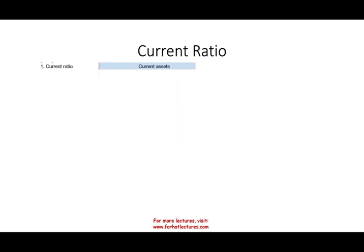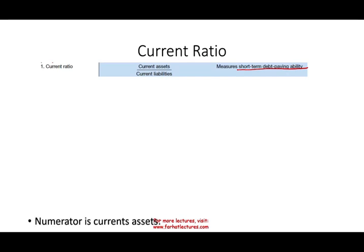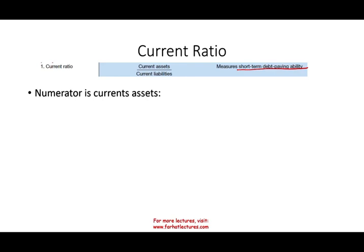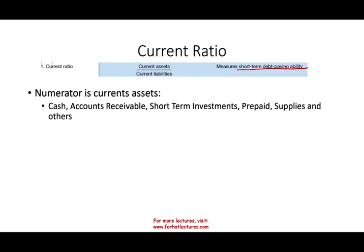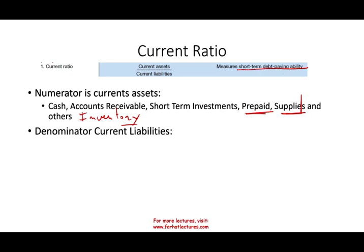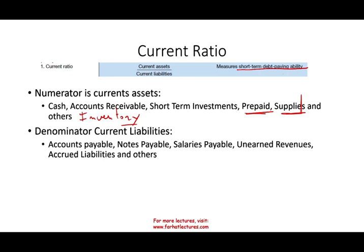How do we compute the current ratio? It's current assets divided by current liabilities. It measures short-term debt paying ability. In the numerator we have current assets — cash, accounts receivable, short-term investments, prepaid, supplies, and inventory. Think about it: prepaid and supplies aren't great for paying liabilities, and inventory may not be very good if you can't convert it quickly to cash. In the denominator you have current liabilities such as accounts payable, short-term notes, salaries payable, unearned revenues, and all accrued liabilities.